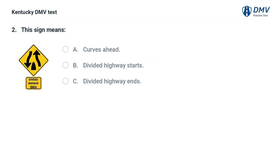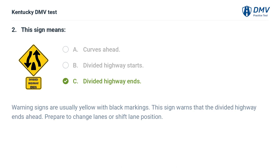This sign means: A. Curves ahead. B. Divided highway starts. C. Divided highway ends. The correct answer is C, divided highway ends. Warning signs are usually yellow with black markings. This sign warns that the divided highway ends ahead. Prepare to change lanes or shift lane position.